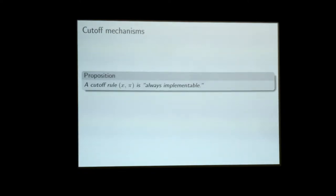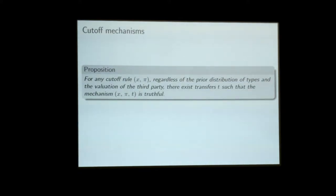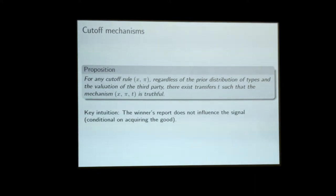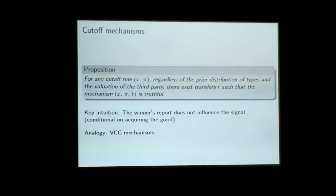One easy but important result is that you can always implement a cutoff rule. For any cutoff rule, for any prior distribution of types, for any valuation of the third party, even for any aftermarket, I will be able to find some prices in the mechanism such that this will be a truthful mechanism. Why? In this mechanism, the report of the winner doesn't actually influence the signal — the signal is determined by the exogenous cutoff — so the winner cannot manipulate the beliefs the mechanism induces. This is very analogous to VCG mechanisms: in a VCG mechanism, conditional on the allocation, the report of the winner doesn't influence how much the winner pays. In a cutoff mechanism, conditional on the allocation, the winner's report doesn't influence the signal that is sent.